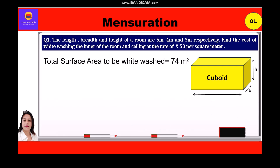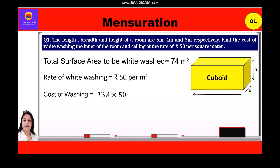The rate of whitewashing is rupees 50 per square meter. Therefore, the cost of whitewashing = total surface area × 50 = 74 × 50 = rupees 3700. So the total cost of whitewashing is rupees 3700.